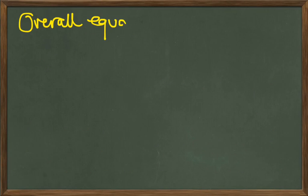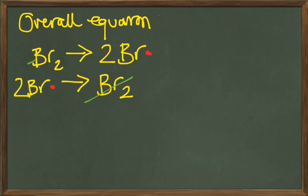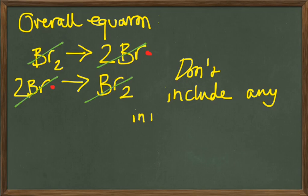Okay, the overall equation for our reaction. Well, to work out the overall equation, we're going to basically cancel out anything that appears on both sides of our arrows. Treat your arrows a bit like equal signs.